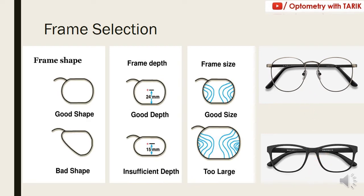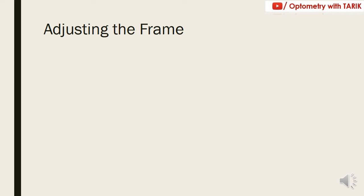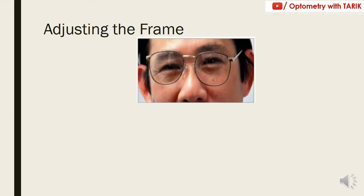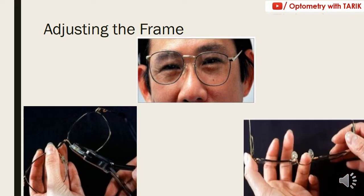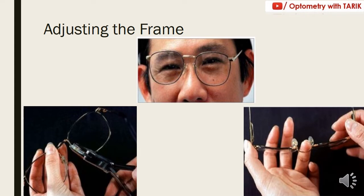The next step is adjusting the frame. Whenever you are taking a frame for a progressive fitting, always adjust the frame before taking any measurements, because if you take measurements without adjusting the frame first, they will not be accurate, leading to a faulty dispensing of your progressive addition lenses. Always check the nose pad angle so it sits properly on the nose, and ensure the facial wrap or three-point touch is proper for a good fit.